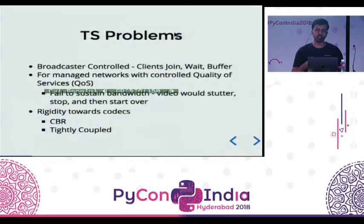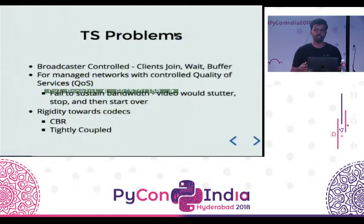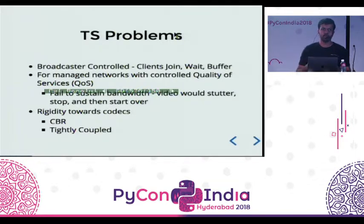The major problem is that it is broadcaster-controlled. The broadcaster is the one who presents the stream, and as a client, what you can do is just tune into the broadcast, decode those network packets, and play whatever you get. If you have any issues, you are out of luck. Additionally, these systems were generally used for networks where people had control over QoS — Quality of Service — which does prioritization of packets, deprioritizing irrelevant ones and prioritizing stream packets so there are no losses.